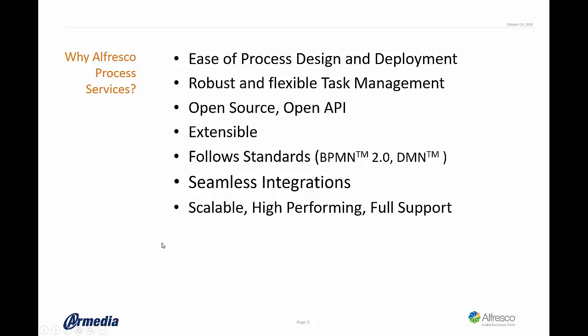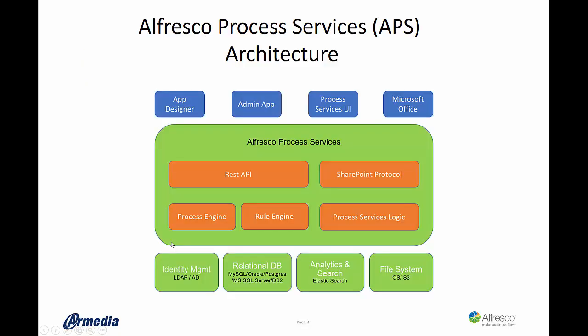Let's take a brief look at the high-level architecture of Process Services. At the top, we have the visual tools where developers can use the app designer, a plug-in and Eclipse workspace to build complex workflows. Next to it is the admin app, the web console to monitor and troubleshoot stuck processes by administrators. And then you have the Process Services workspace, or UI, the main tool to allow business analysts to build and deploy the workflows, execute and participate in the workflow, and view process analytics. Finally, users can use Microsoft Office seamlessly to edit documents attached to the workflow tasks.